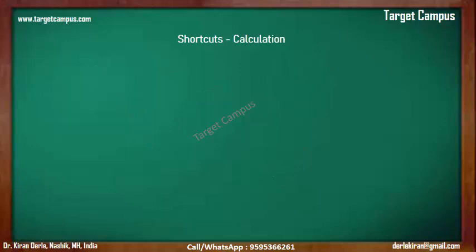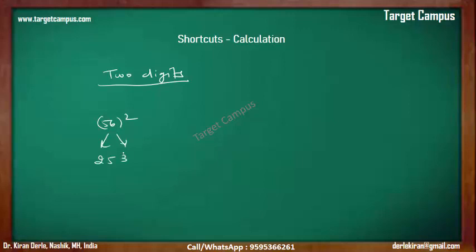Now let's move to squares of two-digit numbers — an amazing trick. Let's say square of 56. What you write in the right part is 6 squared, which is 36. The left part is 5 squared, which is 25. The middle part is 5 into 6 doubled: 5×6 is 30, doubled is 60. We write 60 in the middle. Adding it all up: the answer is 3136.